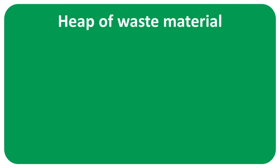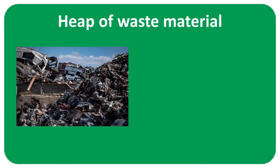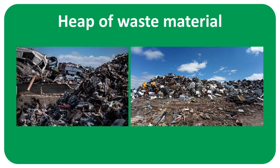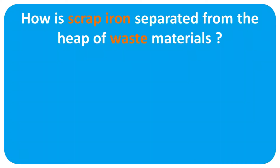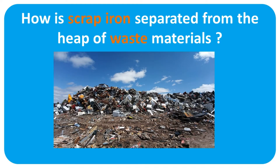Maybe you have seen a heap of waste materials. What happens is that in waste material heaps, there are many types of materials like plastic, wood, polythene, and iron scrap. Now the question is: if there are iron objects present in a heap of waste material, then how is scrap iron separated from the heap?